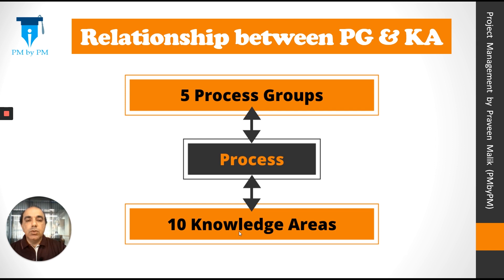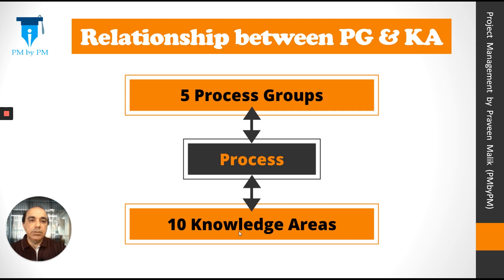Is there a relationship between a process group and a knowledge area? Yes there is. A process belongs to one process group and similarly a process belongs to one knowledge area. All 49 processes are divided into five process groups, and similarly all 49 processes are divided into 10 knowledge areas.